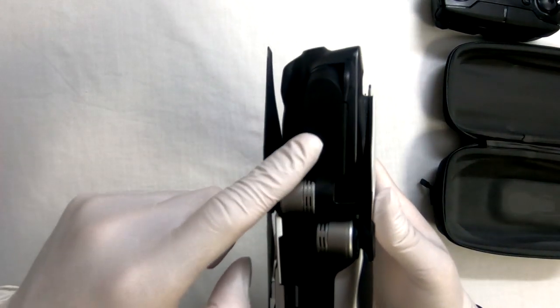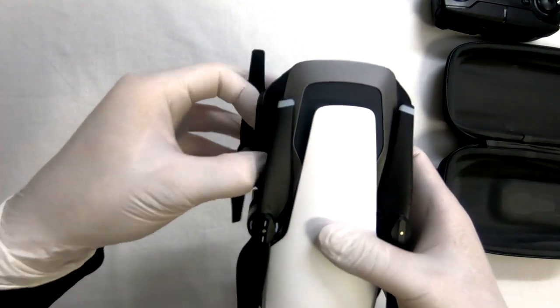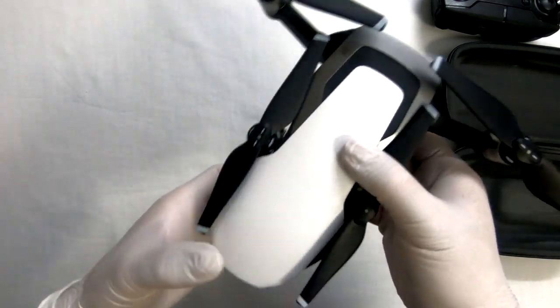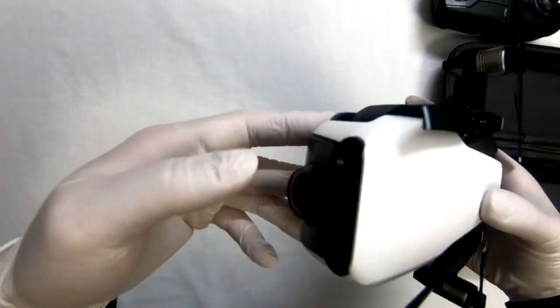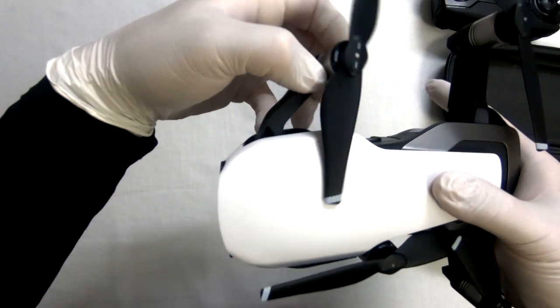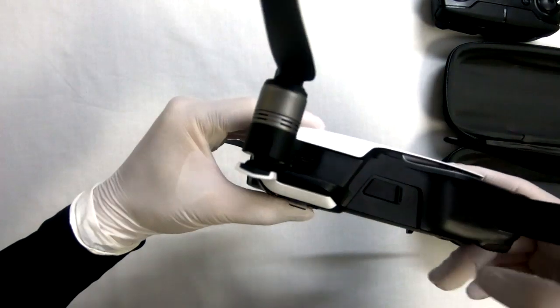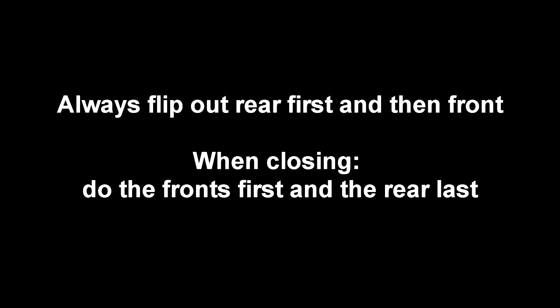First off, it's important to note when you're extending the arms of the Mavic Air, you need to do it in the order of the rear legs first and then the front legs. There is a reason for it because if you do it the opposite, you'll run into a little bit of friction and contact which over time can possibly damage your propellers or put some added stress on the propellers when it's packed away in your case during transport.